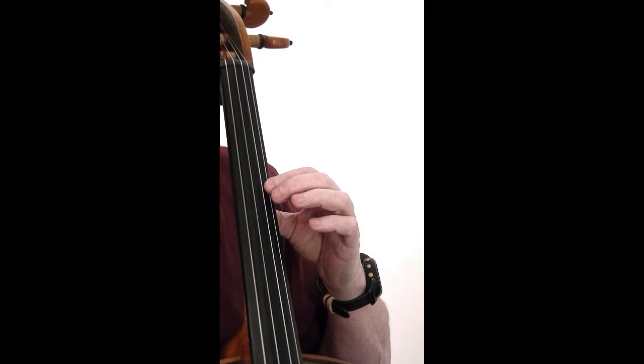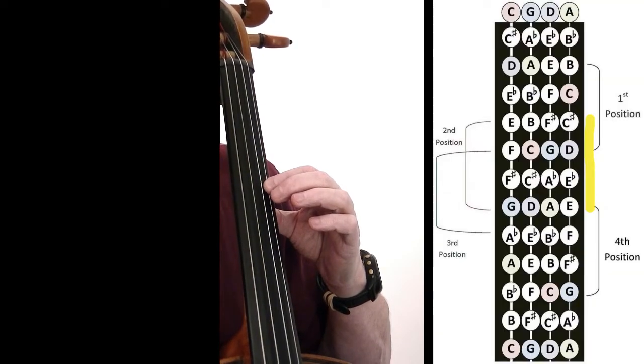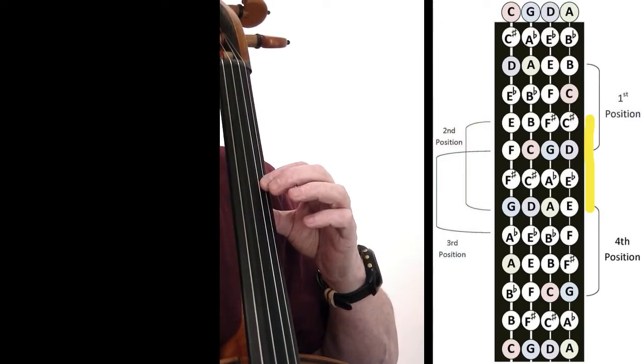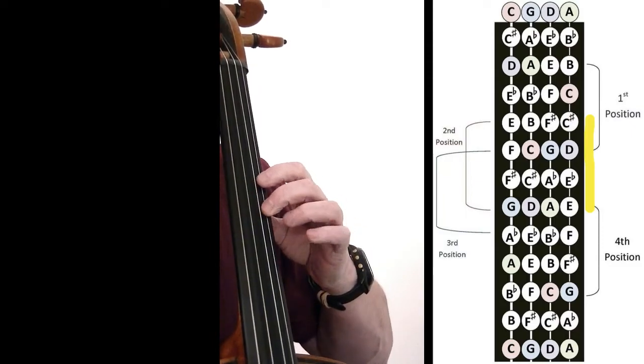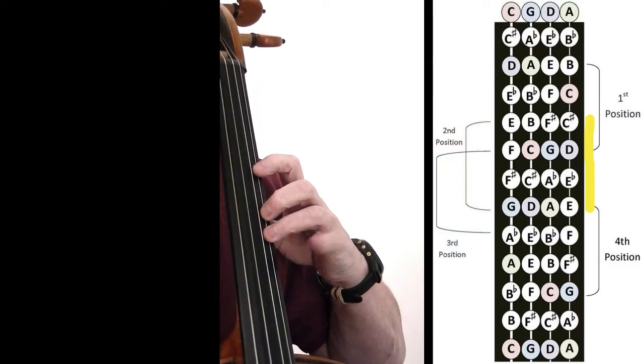So now I move up to second position. I'm beginning with the position that is indicated on the chart, and of course, we're still on the A string. Now my first finger is on C sharp, my second finger is on D, my third finger is on E flat, my fourth finger is on E natural.